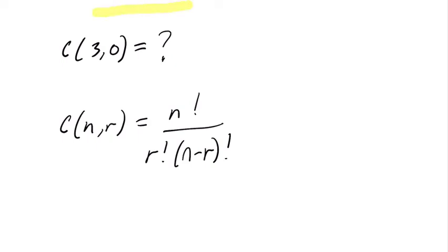So in this video, I want to talk to you about what it means to choose nothing, and what the answer must be, and more importantly, how to prove it. So what does this mean? This means you're choosing from three objects, groups of size zero.